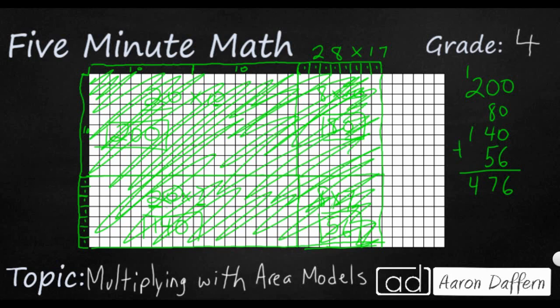Now, how can we do this without an area model? That's what we call the standard algorithm. So let me show you how we do it the old-fashioned way. It's a little bit quicker, but the area model helps us see why it works.